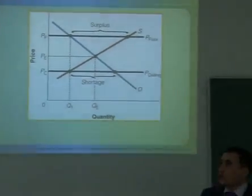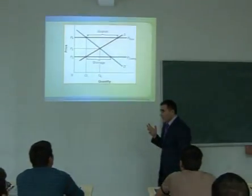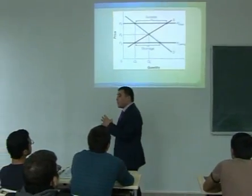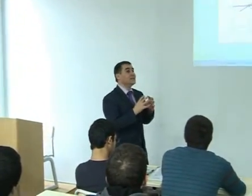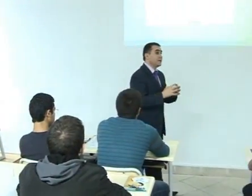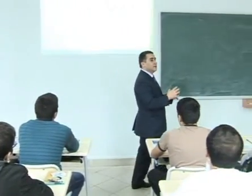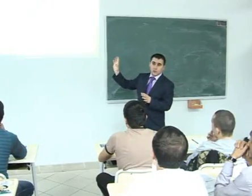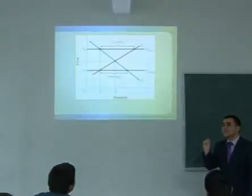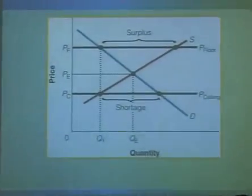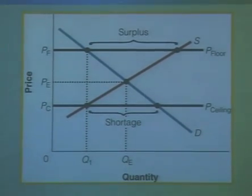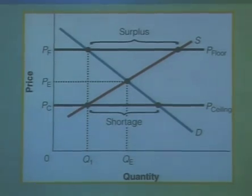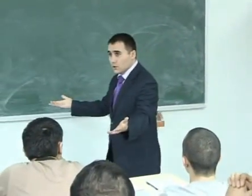Let's go with the price floor. When government sets a price floor, it simply means that if you want to employ somebody legally, you are not allowed to pay them less than PF. But it does not mean that you have to pay exactly this number. In our example it was 450 - you could pay 500, 600, or 1000, no problem.